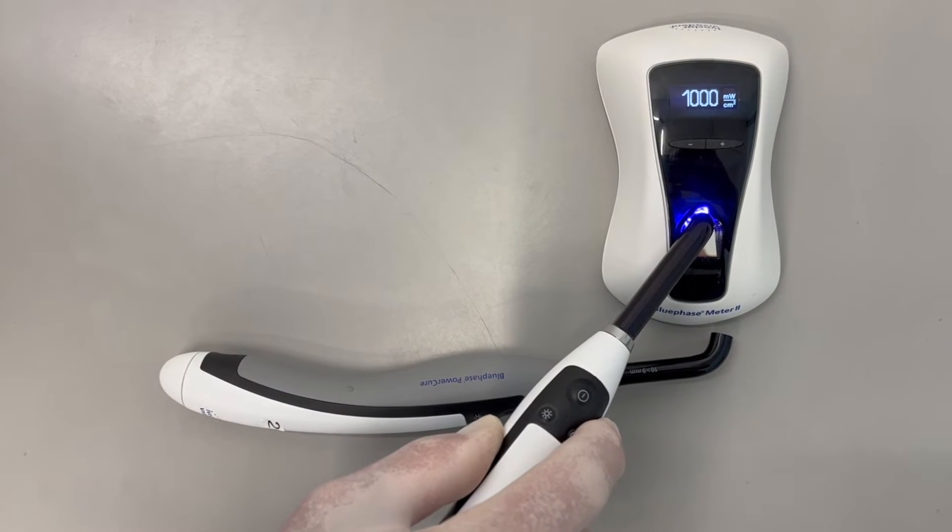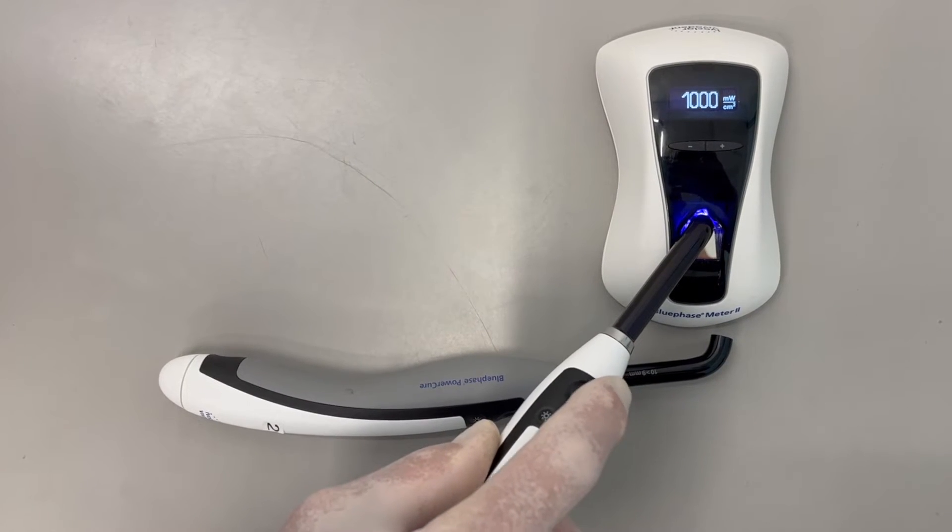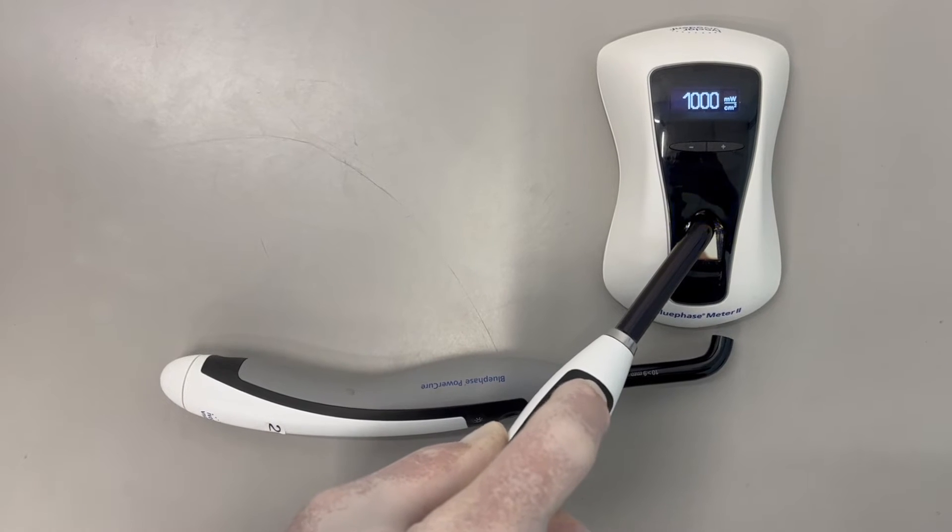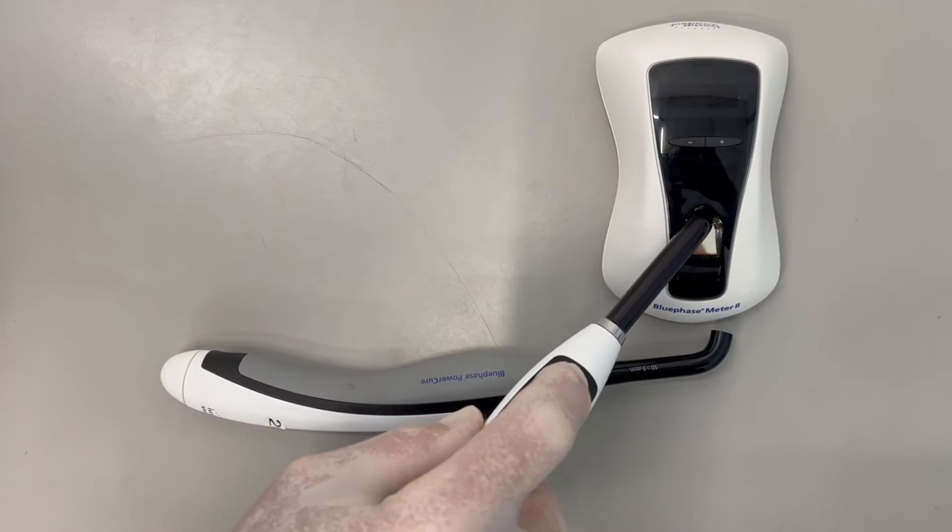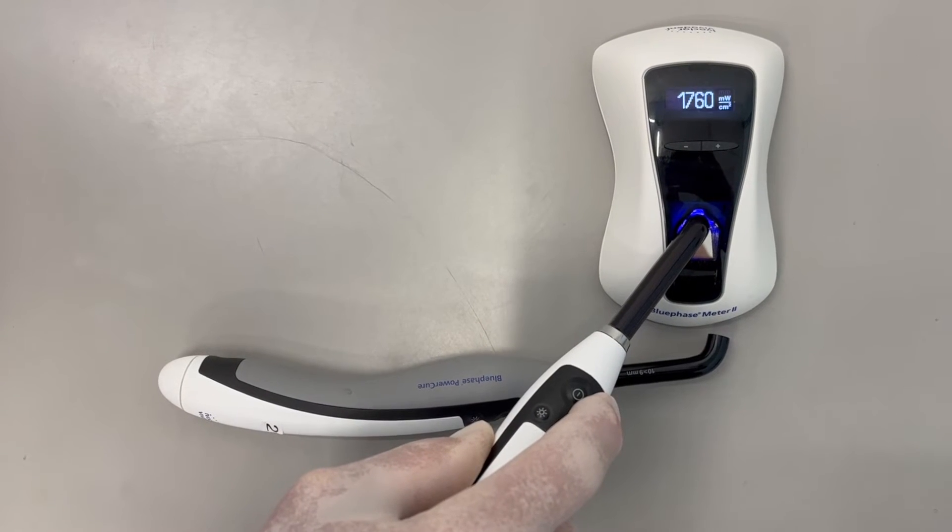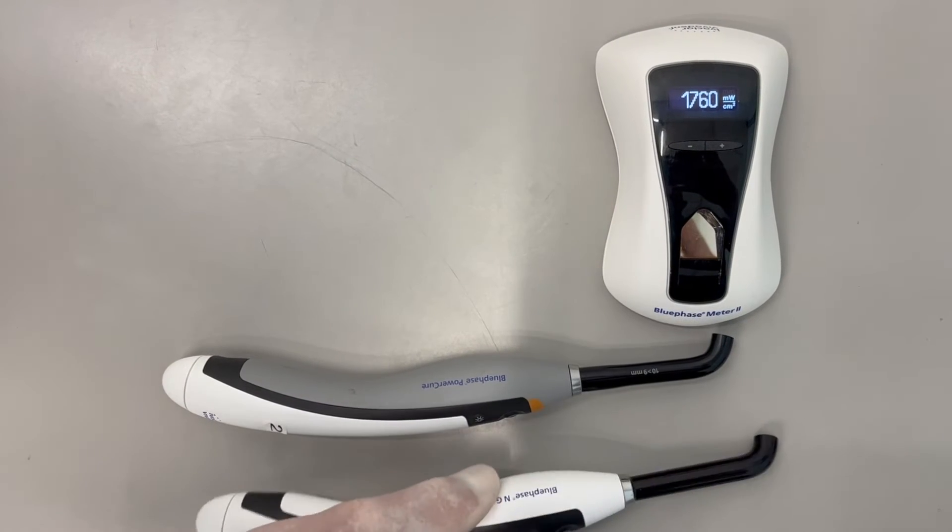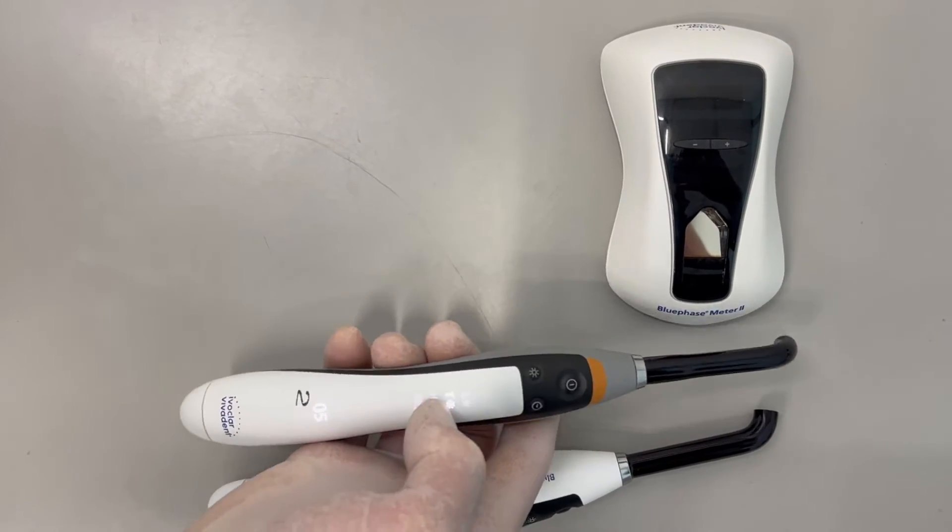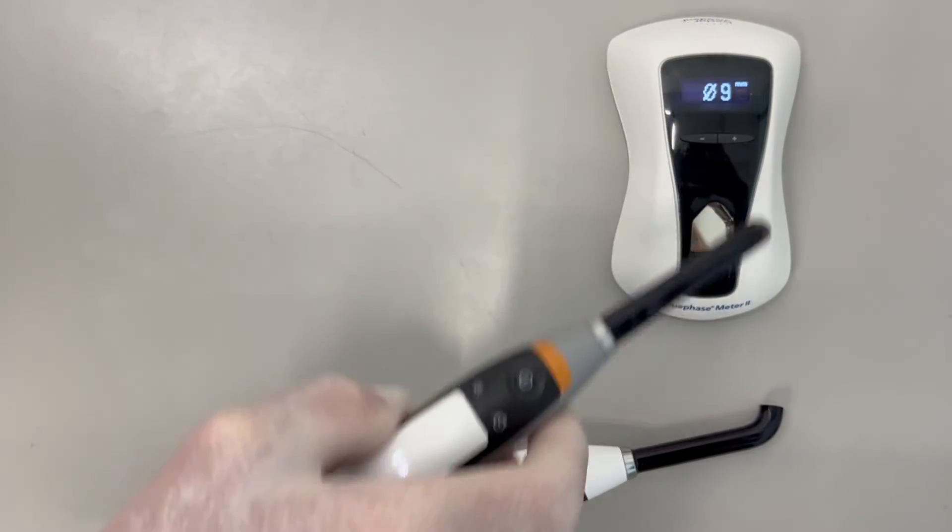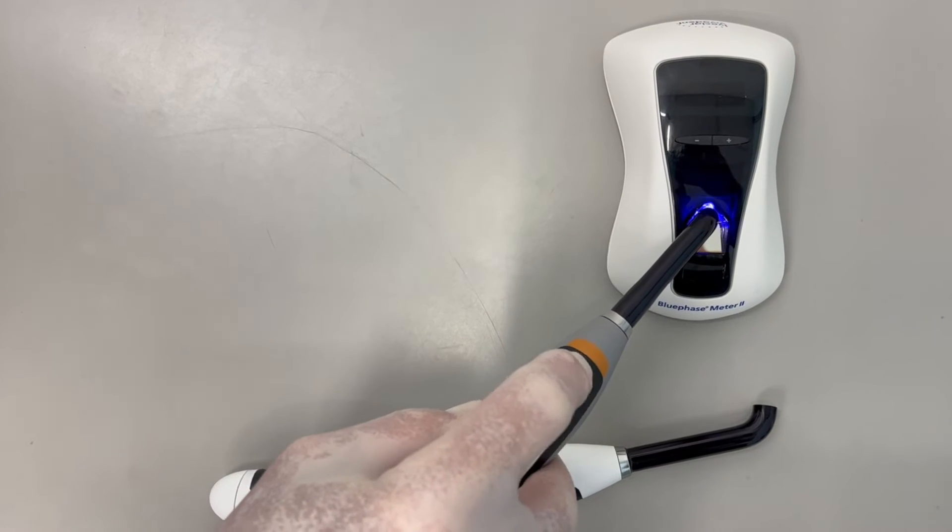Both lights deliver the same irradiance on the high setting. Now changing to the turbo setting: the NG4 delivers 1760, and when we change the tip diameter to 9mm for the PowerCure, the output is 1750 milliwatts per centimeter squared.